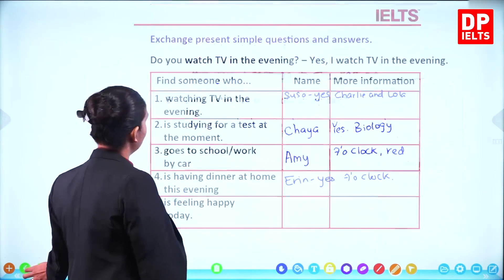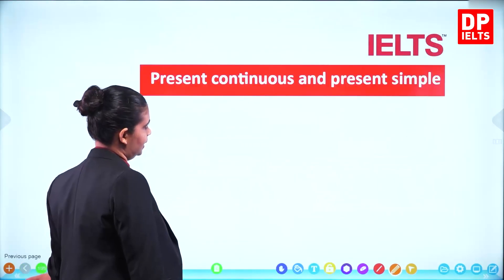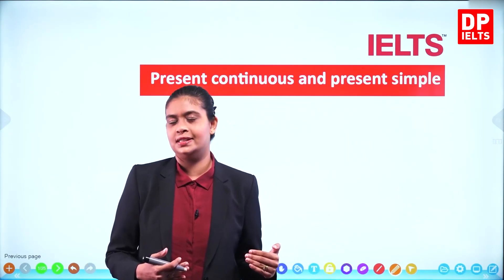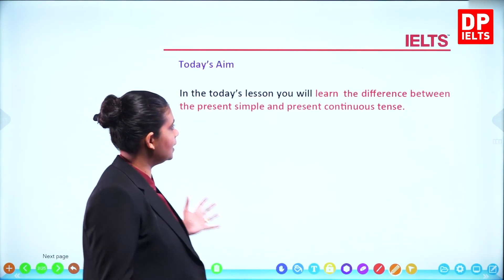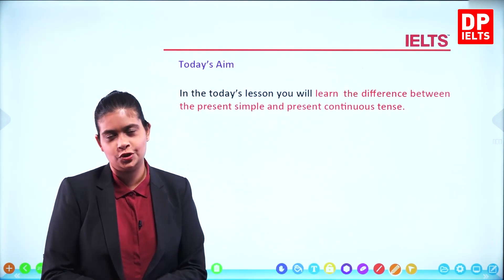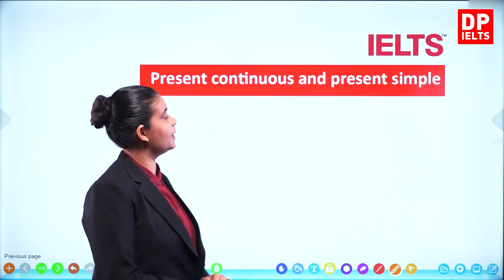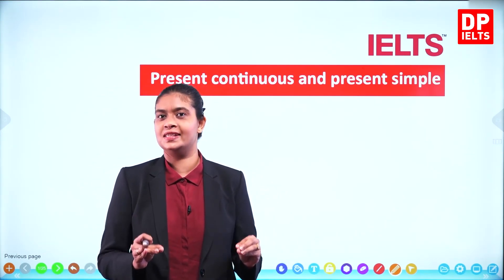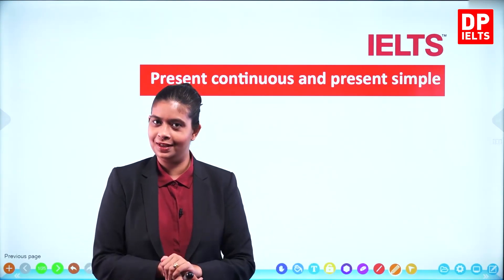Alright, so we have come to the end of the lesson. We did practice on both the simple present tense and the present continuous tense. Our lesson aim was to learn the difference between the present simple and present continuous tense. We looked at the differences between the two tenses and did two sets of practice questions. With that, we have ended the lesson.